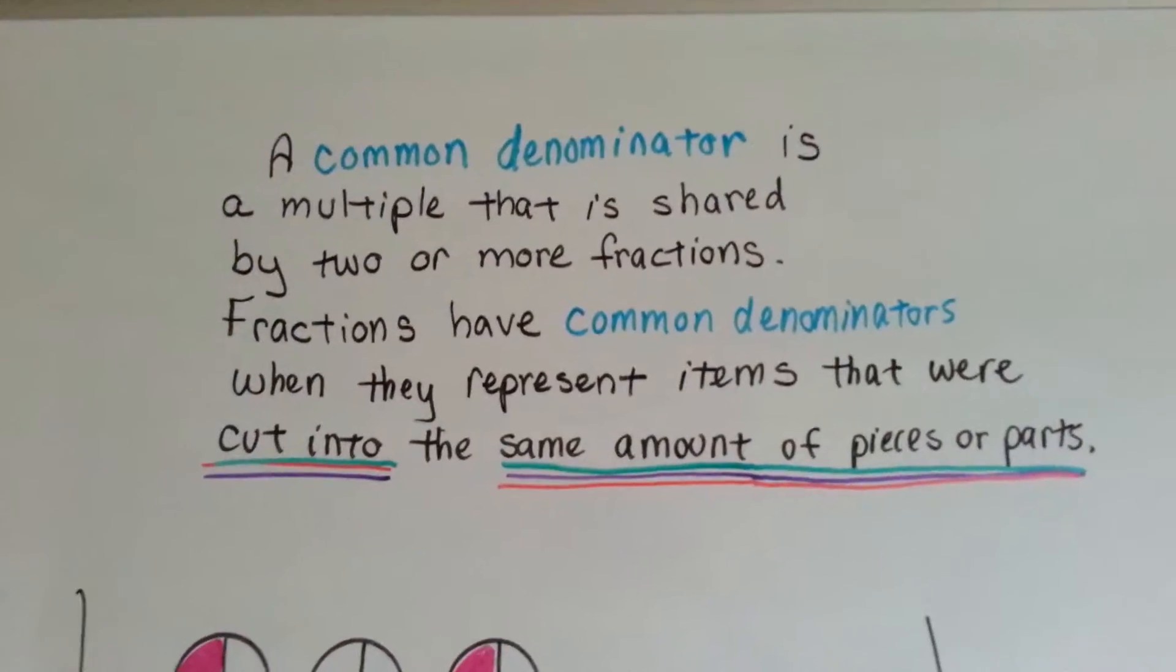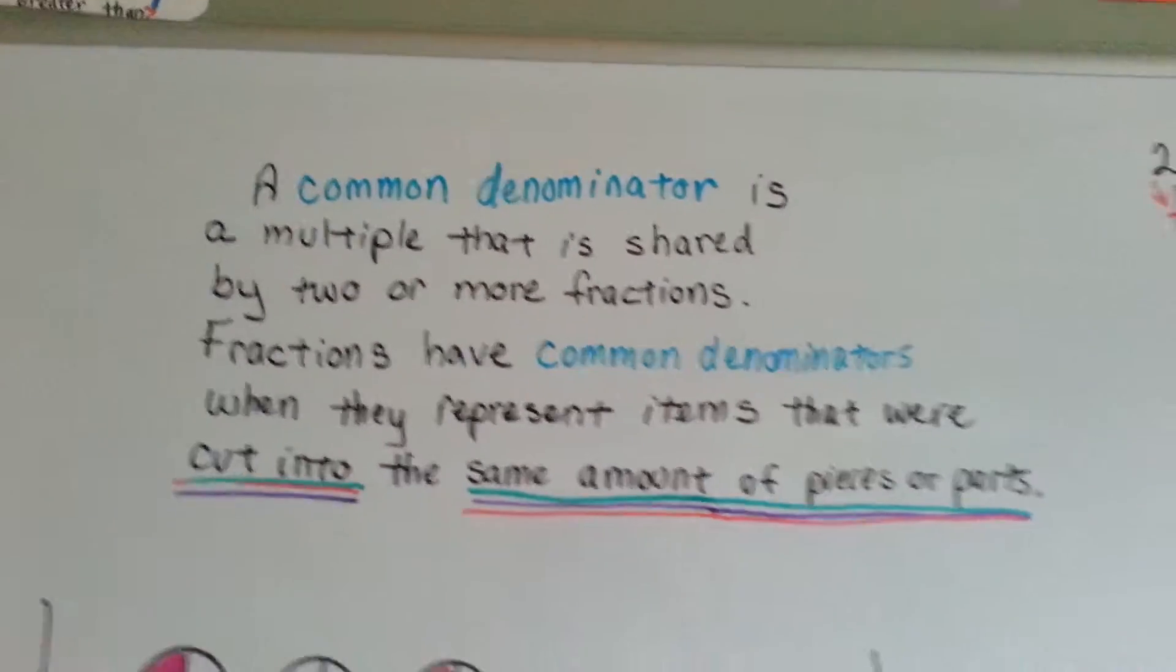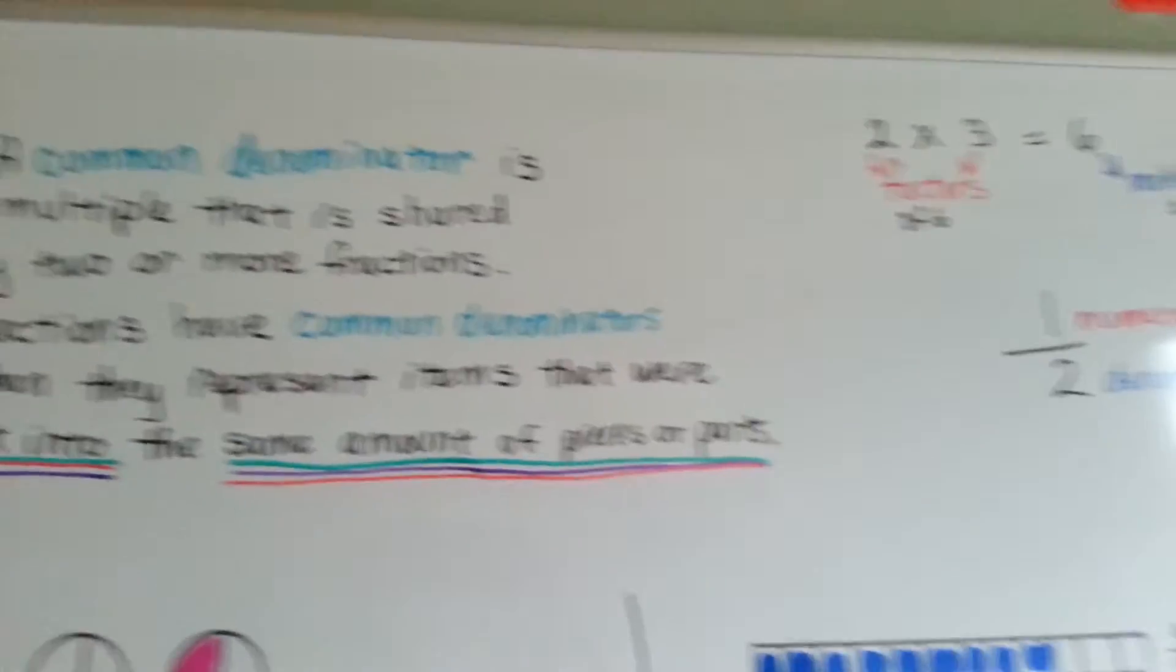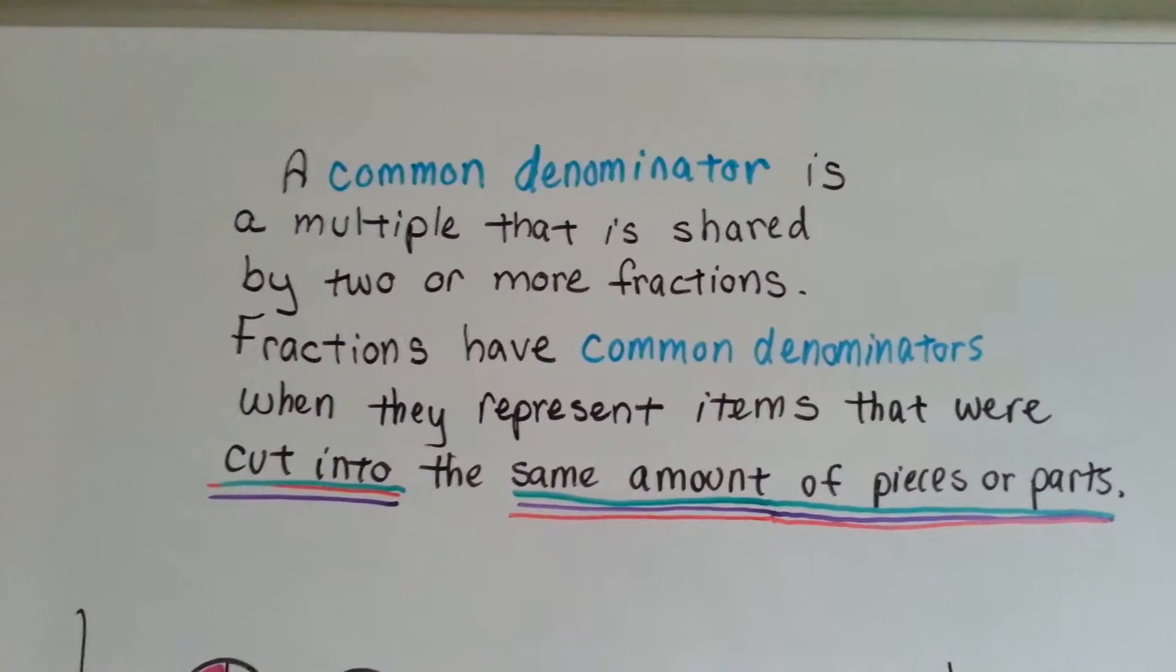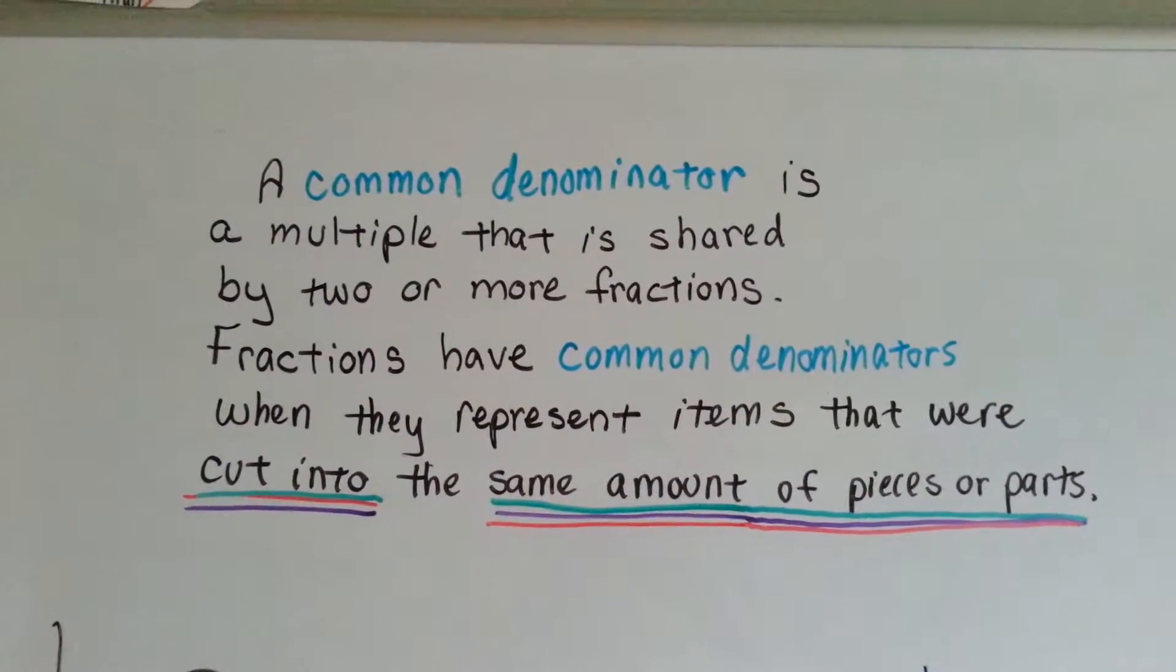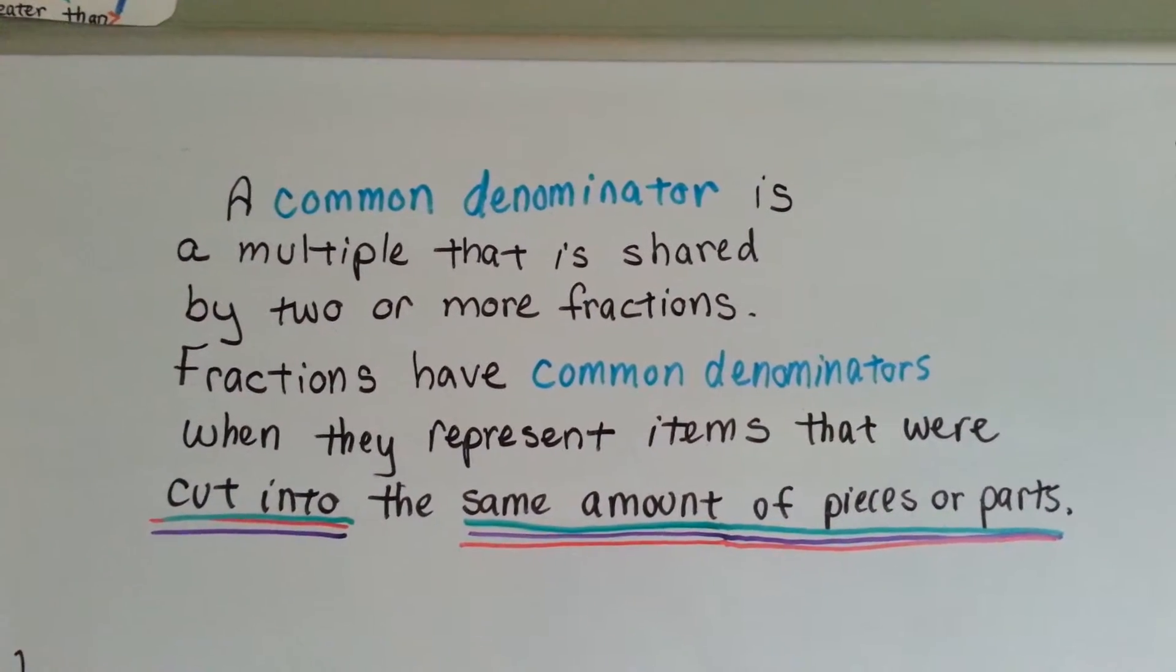A common denominator is a multiple that is shared by two or more fractions. It's a multiple that is shared by two or more fractions. Fractions have common denominators when they represent items that were cut into the same amount of pieces or parts.